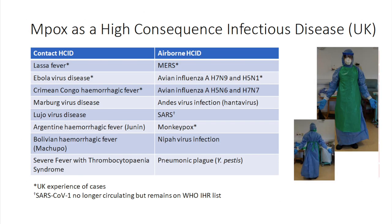Coming on to the UK: we managed monkeypox — or we did manage all monkeypox — as a high-consequence infectious disease prior to May 2022. It sits with lots of these other rather exotic, sometimes fatal infections where we manage them in a specific way, often with high-level PPE shown on the right. They may be managed in specific centres, they may need experimental treatments, and we often lack vaccines to prevent transmission.